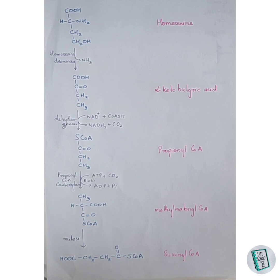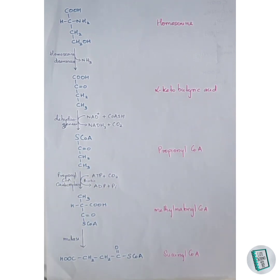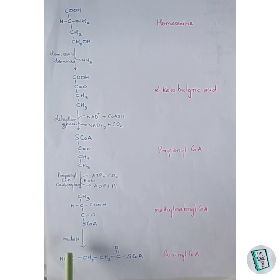Propionyl-CoA is then carboxylated to form methylmalonyl-CoA. A CO₂ molecule attaches to the carbon and the hydrogen atoms rearrange to form methylmalonyl-CoA. In the final step of methionine degradation, the atoms of methylmalonyl-CoA are rearranged in the presence of mutase enzyme to form succinyl-CoA.